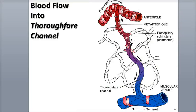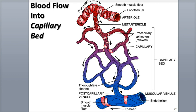Arterioles regulate blood flow by regulating resistance — the opposition to blood flow as the result of friction created between the blood vessel wall and the blood itself. They are also called resistance vessels because of this ability. When the arteriolar diameter gets smaller during vasoconstriction, friction and resistance increase, which reduces blood flow into the capillaries and increases blood pressure. When an arteriole relaxes through vasodilation, friction and resistance decrease, and blood flow into the capillaries increases, which also decreases blood pressure.